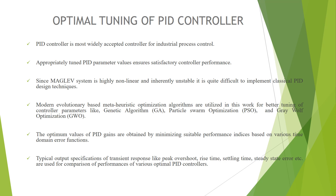Therefore, in this research, modern evolutionary meta-heuristic optimization algorithms like Genetic Algorithm (GA), Particle Swarm Optimization (PSO), and Grey Wolf Optimizer (GWO) are used for better tuning of the controller parameters. The optimum values of the PID gains are obtained by minimizing suitable performance indices based on various time-domain functions. The performance of the optimized controller parameters is compared in terms of various transient and steady-state specifications like overshoot, rise time, settling time, etc.